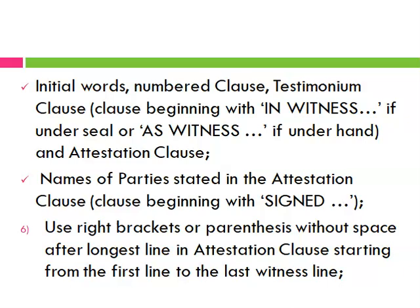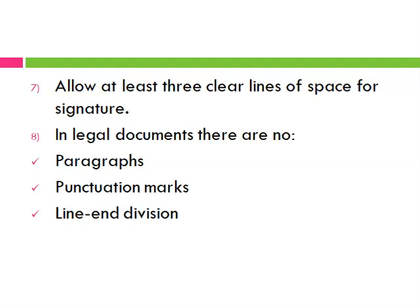Number six says you should use right brackets or parentheses without space after the longest line in the attestation clause, starting from the first line to the last witness line. An example of this can be seen in the will with endorsement video linked at the end. Finally, you should ensure that you allow at least three clear lines of space for signatures. In legal documents there are no paragraphs, no punctuation marks — specifically, watch out for commas and full stops.